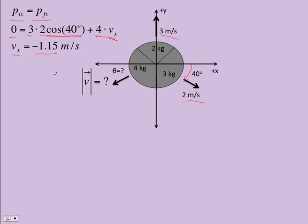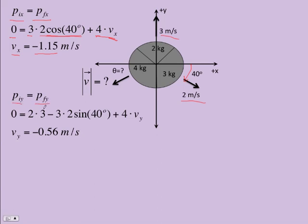Let's take a look at the y momentum. The initial y equals the final y, and the initial y is also zero. The two kilogram piece is all in the plus y direction. As a matter of fact, maybe we even oriented our coordinate system so that one of the pieces was all going in one of the directions. That can make the problem a little easier. So it's got positive momentum of two kilograms times three meters per second.